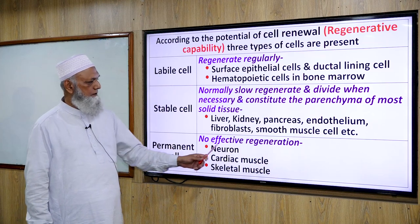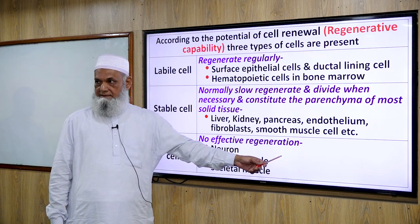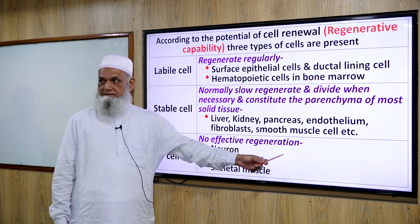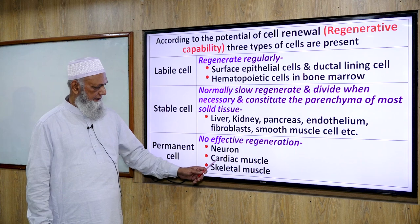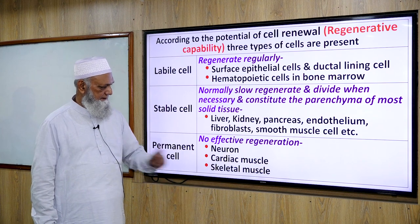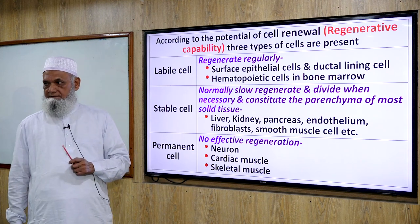Permanent cells have no effective regeneration. Examples include neurons, cardiac muscle, and skeletal muscle.